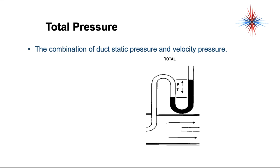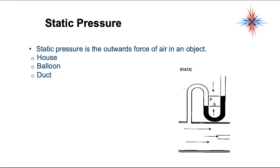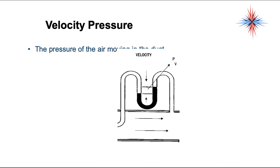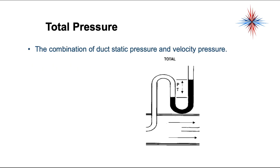Total static pressure is the combination of the duct static pressure and the velocity pressure. So we have three pressure readings: static pressure, which is the outward force; velocity pressure, which is the air moving inside the duct; and total pressure, which is the combination of duct static pressure and velocity pressure.